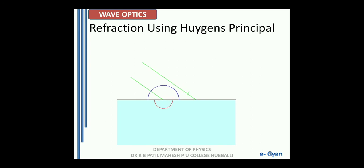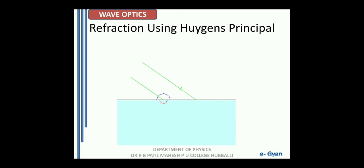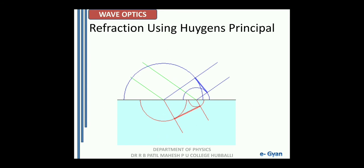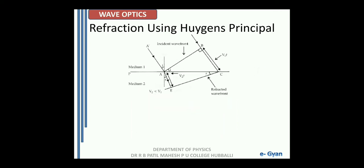Let us use the same diagram to understand refraction. Now you have to focus on the green light and the red light. The green light falls on the interface, which is the incident wavefront, and the red line is the refracted wavefront. We have two media, medium 1 and medium 2, separated by a line. The incident wavefront is again AB, which falls on the surface. Again, by considering the Huygens principle, every point on wavefront AB acts as a secondary source of light. The angle of incidence of the incident wavefront is I, and it undergoes refraction and EC acts as the refracted wavefront.